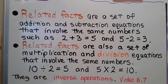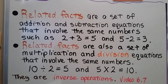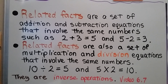Related facts are a set of addition and subtraction equations that involve the same numbers, such as 2 plus 3 is equal to 5 and 5 minus 2 is equal to 3. Related facts are also a set of multiplication and division equations that involve the same numbers: 10 divided by 2 is equal to 5 and 5 times 2 is equal to 10. They are inverse operations. Addition and subtraction are inverse operations, and multiplication and division are inverse operations.